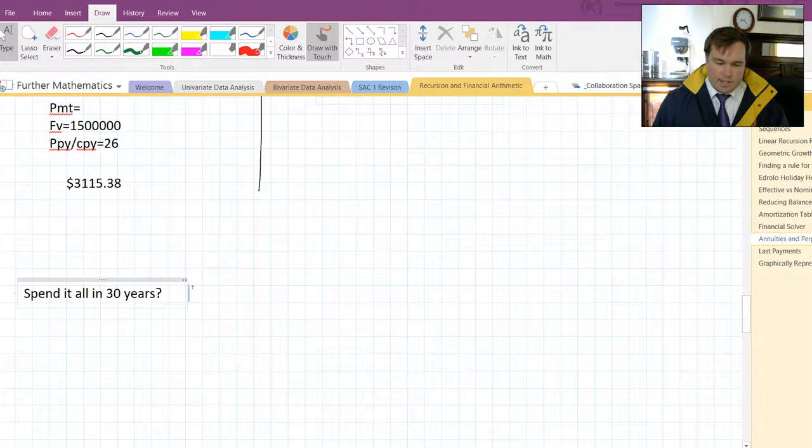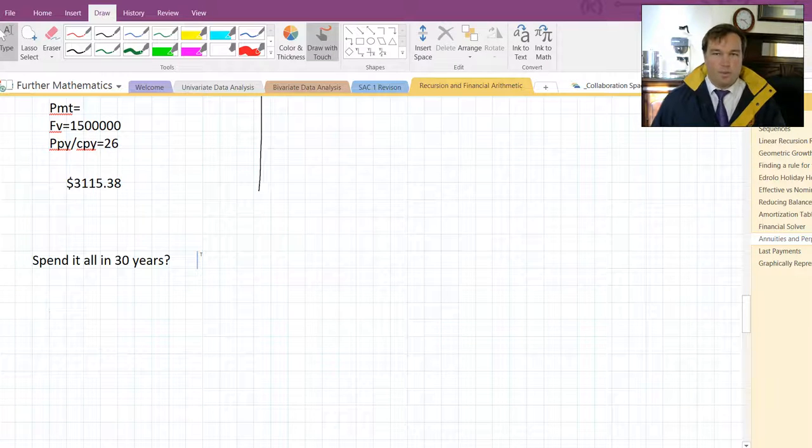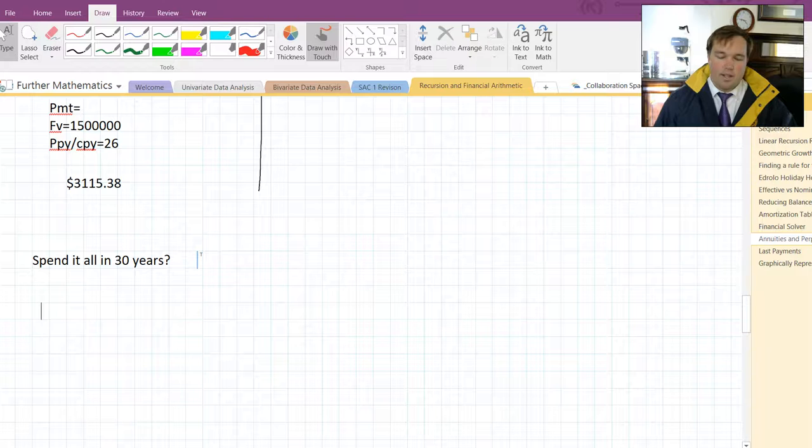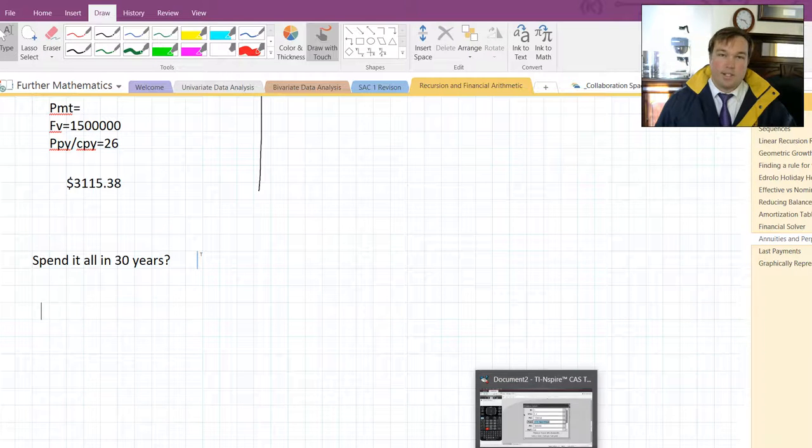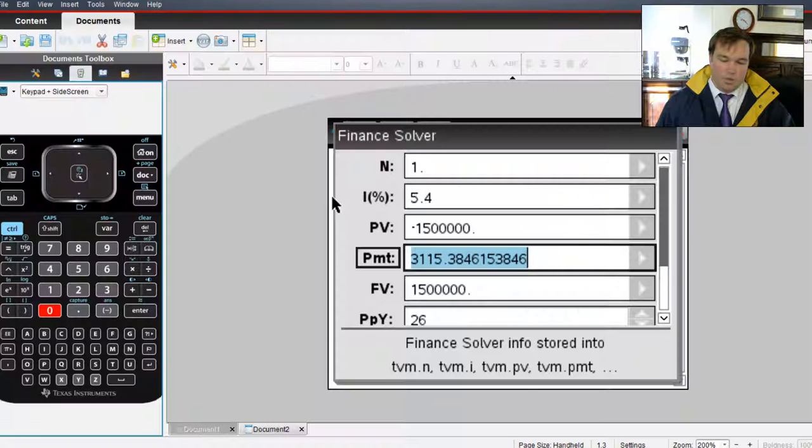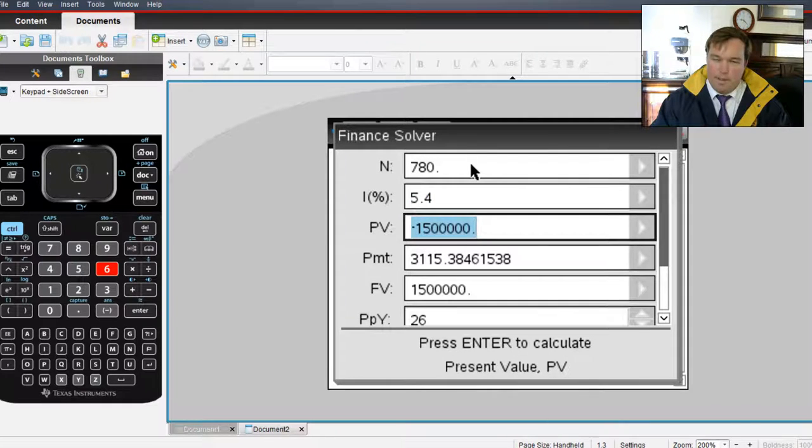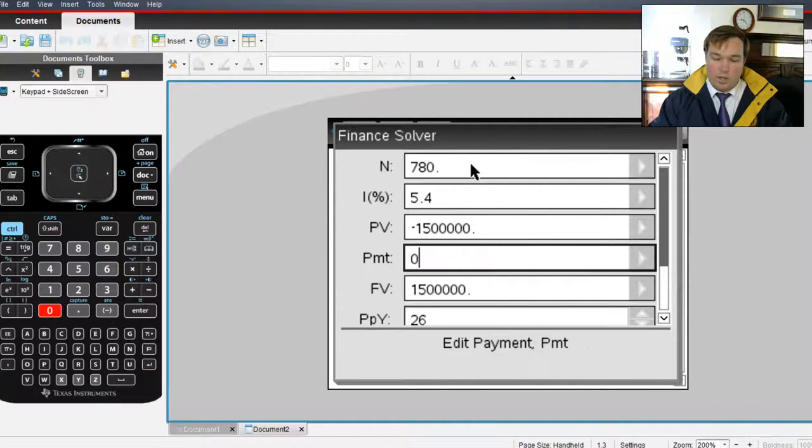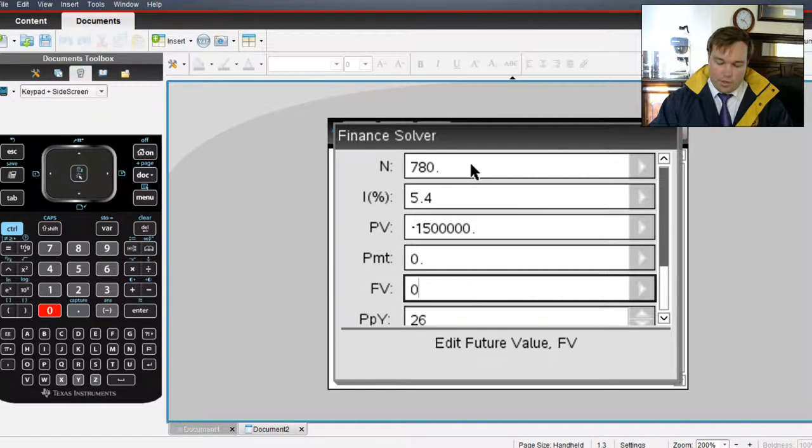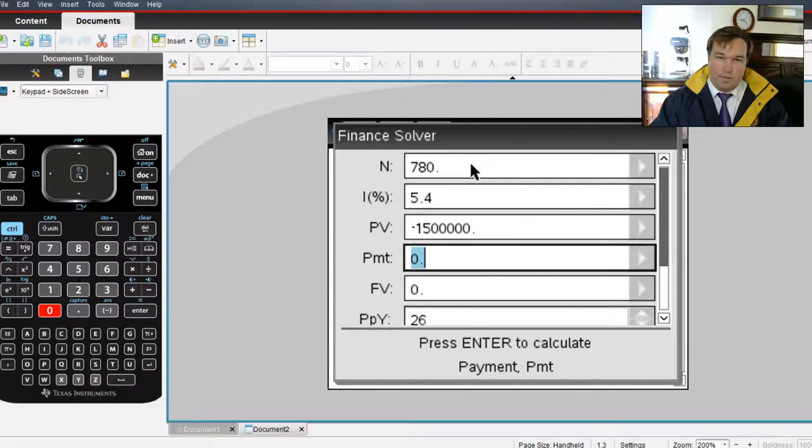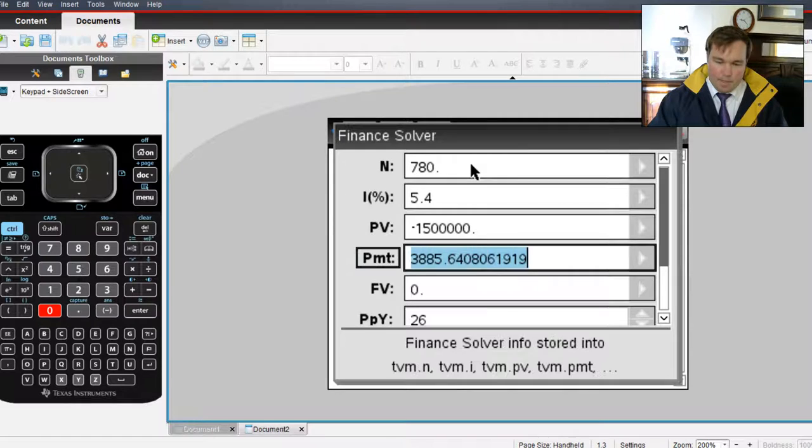What if he plans to spend it all in 30 years? If he plans to spend all of that 1.5 million in 30 years, how much can he withdraw every fortnight? So here is no longer a perpetuity, it's an annuity, it's being drawn down. Now, 30 years is 30 lots of 26 fortnights, because we're working at fortnights, interest stays the same, present value stays the same, payment we don't know what it is. Future value is also going to be at 0, because it's going to be withdrawn down to 0. So the amount he can withdraw each time is $3,885.64.